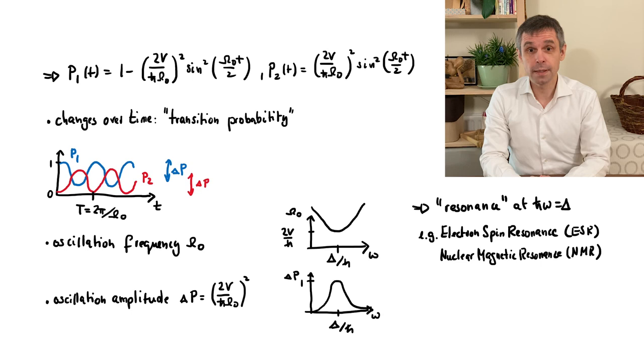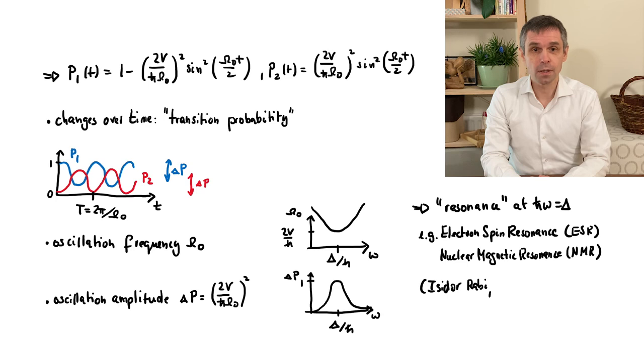So this is a very specific and practically important example of a driven quantum system. But in our solutions of this problem above, we also encountered some features that would be very useful if they applied in general settings. For instance, the probabilities automatically added up to 1, which means that the state remains normalized at all times. So we move on to a more general discussion where we establish properties that apply to all driven quantum systems.